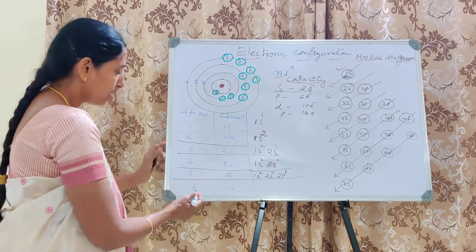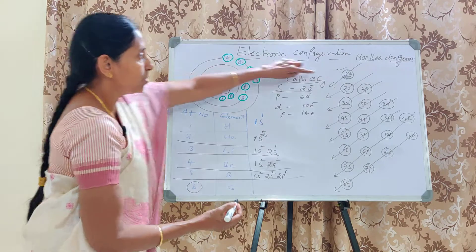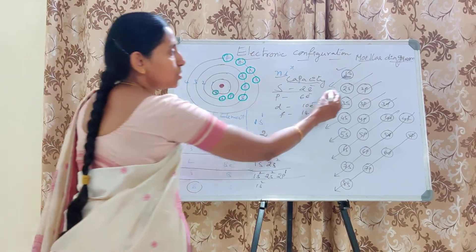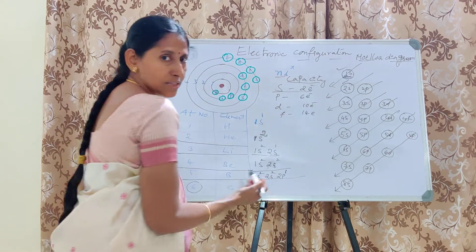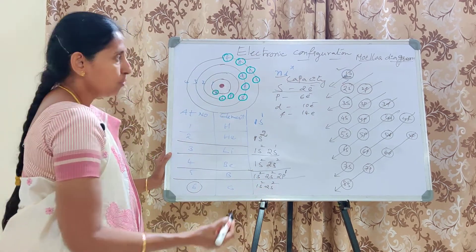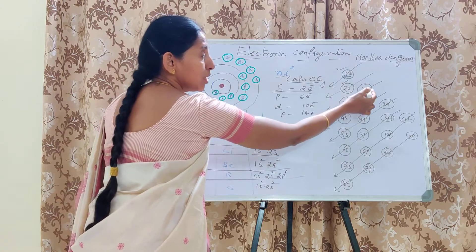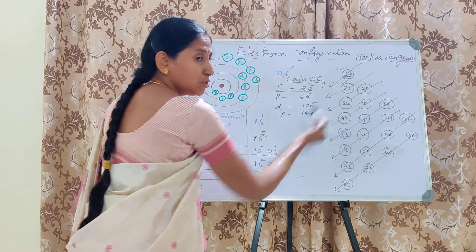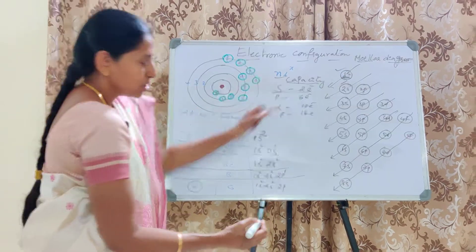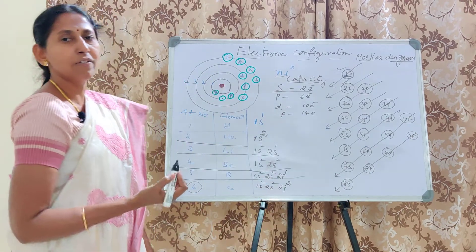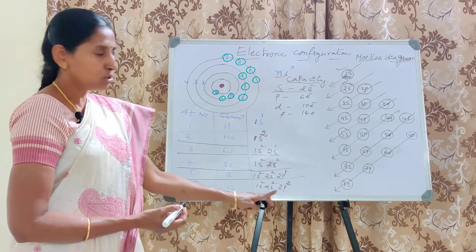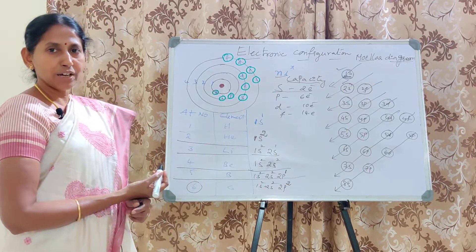Next, Carbon has 6 electrons. First two go to 1S², next two go to 2S², and then we switch to the third arrow mark showing 2P. P has a capacity of 6 electrons, so the next two electrons go to 2P. Carbon's configuration becomes 1S² 2S² 2P². Likewise, for Nitrogen: 1S² 2S² 2P³, and for Oxygen: 1S² 2S² 2P⁴, and so on.